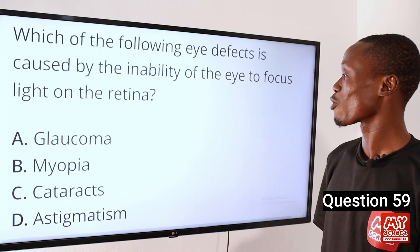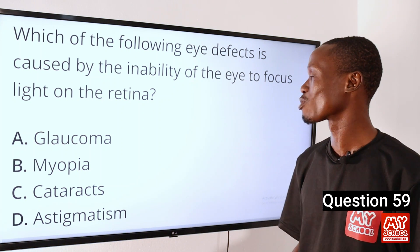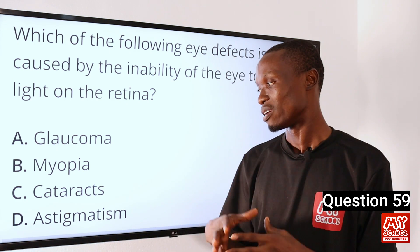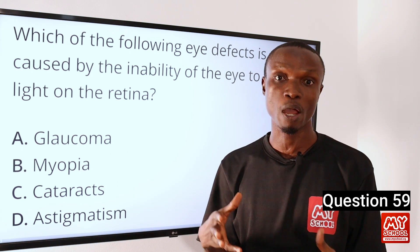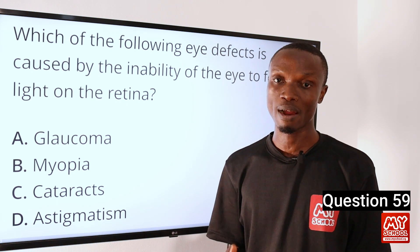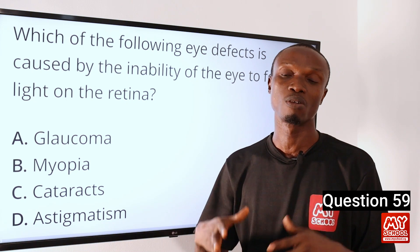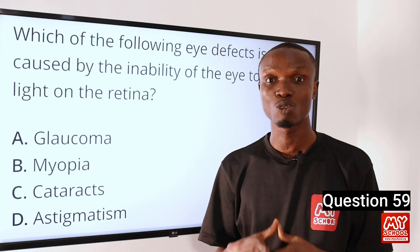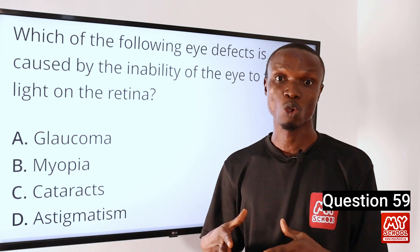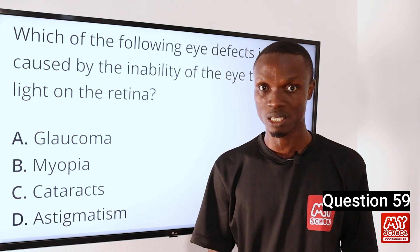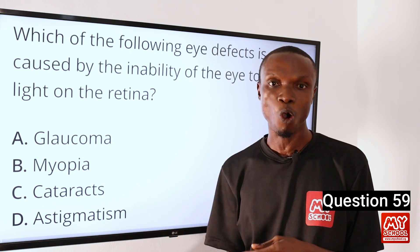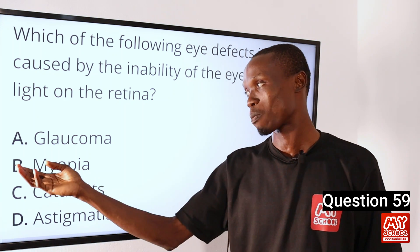Question 59. Which of the following eye defects is caused by the inability of the eye to focus light on the retina? A. Glaucoma. B. Myopia. C. Cataract. D. Astigmatism. The answer is B — myopia, also known as short-sightedness. It is an eye defect characterized by the inability of the eye to focus light on the retina. A person suffering from myopia can see near objects clearly, but distant objects are blurred. It is caused when the eyeball is elongated or the cornea is too curved, causing incoming light to focus in front of the retina instead of directly on it. So that makes option B the correct answer.